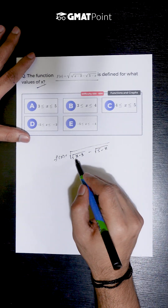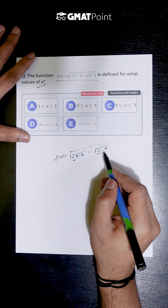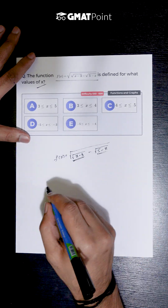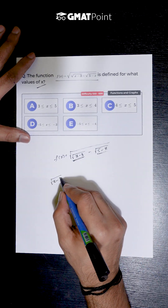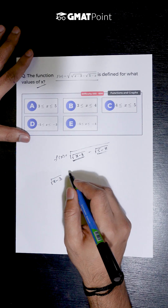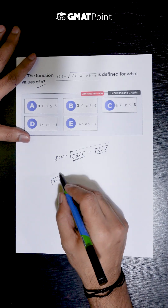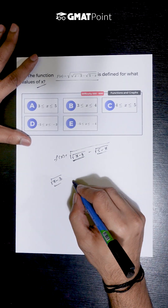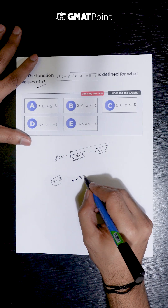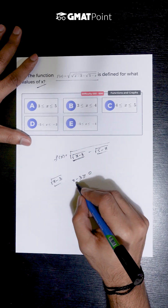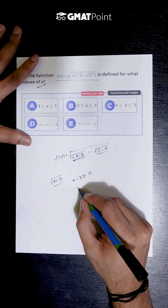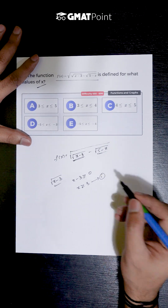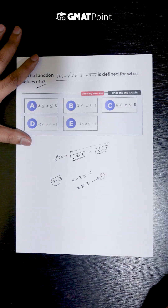First let us go from inside to outside. If we take a look at this first square root, for the function to be defined, the value inside this square root has to be greater than or equal to 0. So the first condition is x minus 3 must be greater than or equal to 0, and from this we get x must be greater than or equal to 3.